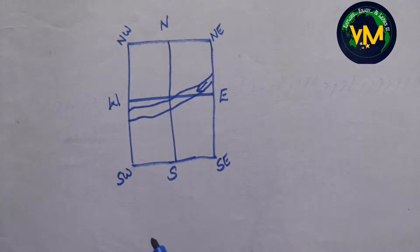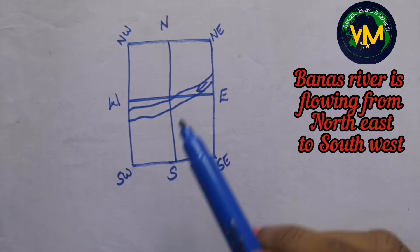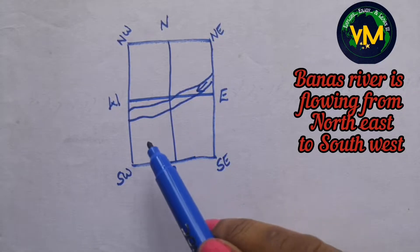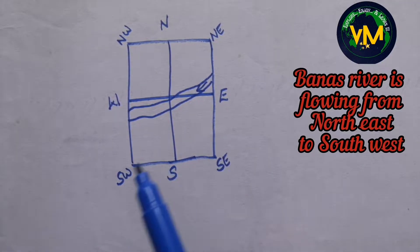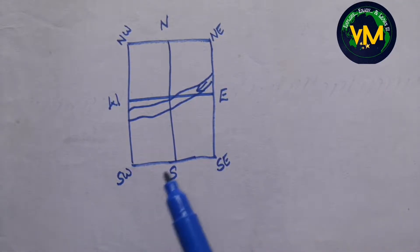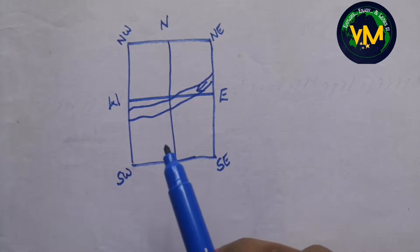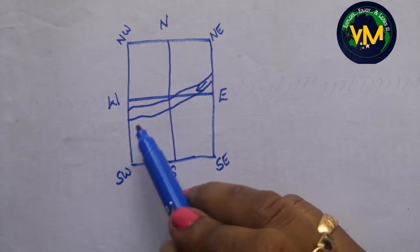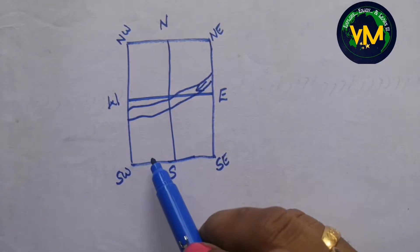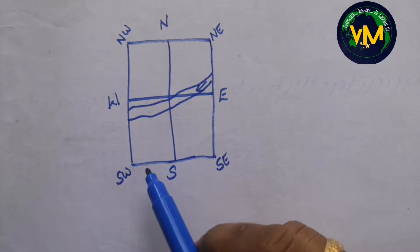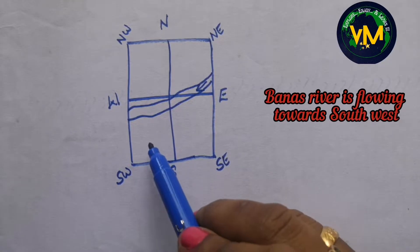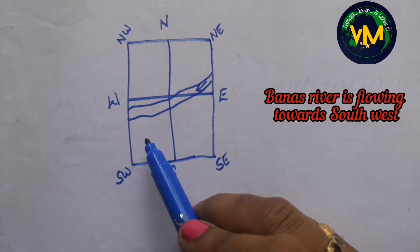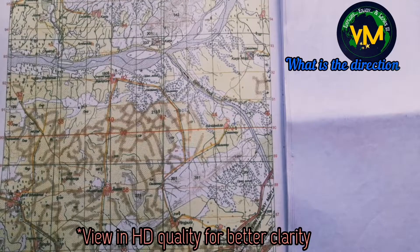So the answer will be: Banas river is flowing from northeast to southwest. According to the council, it is more than enough if you write towards which direction the river is flowing. So in this case, if you write Banas river is flowing towards southwest, it is also correct. Now let us learn to find the direction of Balaram Nadi.